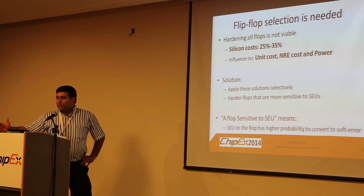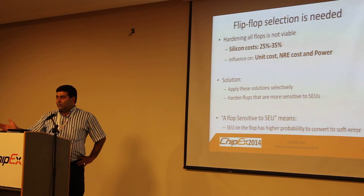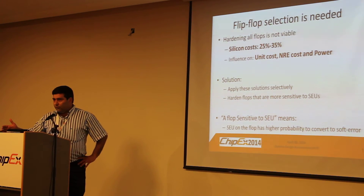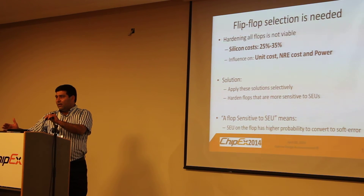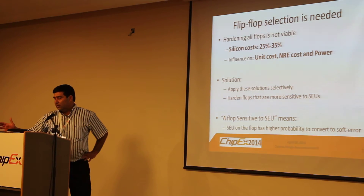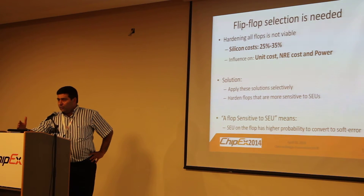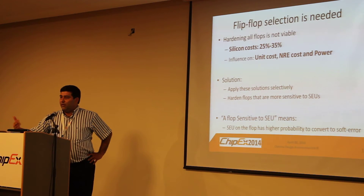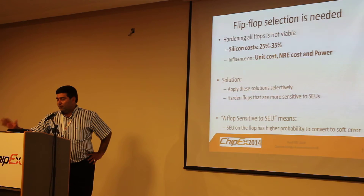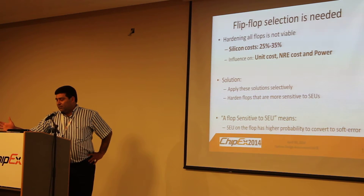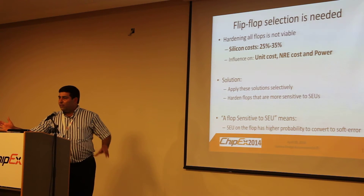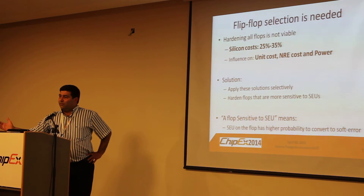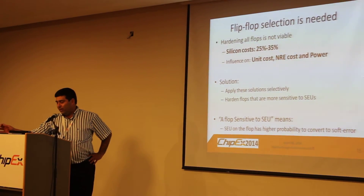What's clear from what we've seen is that we need some mechanism to evaluate the flops — which flops are more sensitive to soft errors? Which ones, if hit by a single event upset, will cause a soft error and which won't? If we harden or protect all the flops, we're paying 35–25% silicon and power at the chip level, which is a very high price that nobody will pay outside of space applications. The solution is to apply these techniques selectively, where we are most sensitive.